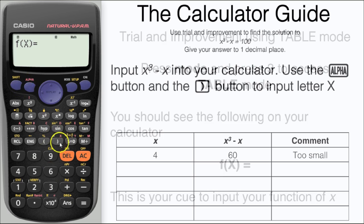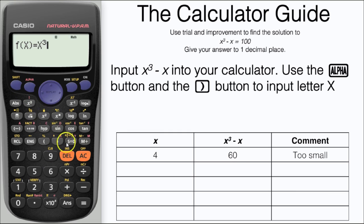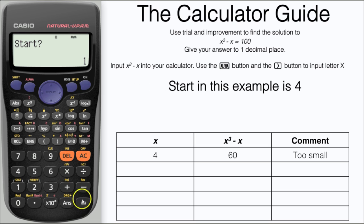You can use this to add your function of X. In this case it's X cubed minus X. Use the alpha and right bracket buttons to input X. Press equals and it will ask for a start figure. In this example it's four, the figure we're given in the table.